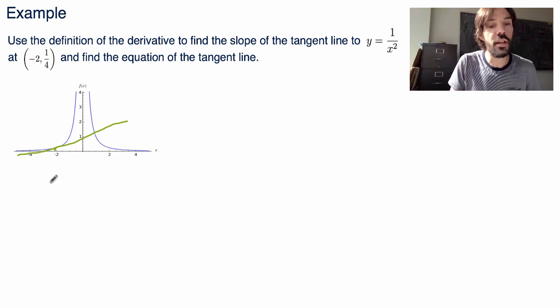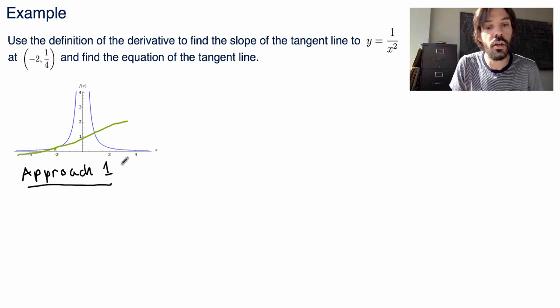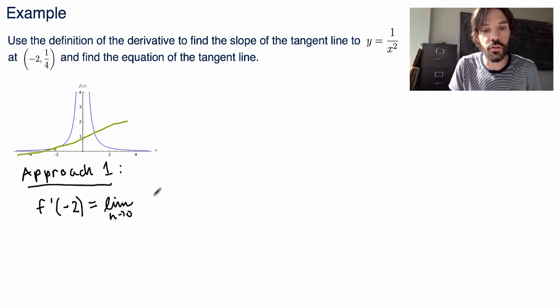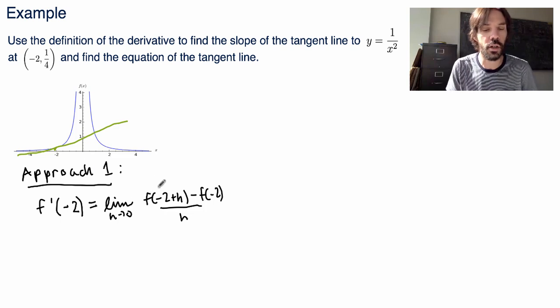Ok, so to find the equation of the tangent line what we really need to do first is find the slope of the tangent line. Now there's two ways you can do that. So let me first talk about the approach that I will call approach 1, which consists in finding the slope directly from the definition of the derivative at the point minus 2. Because that's the point we're interested in. So you just use the definition directly. So you'll get something like this: f prime of minus 2 equals limit as h goes to 0 of f of minus 2 plus h minus f of minus 2 divided by h. And now you could replace the function by 1 over x squared and evaluate this limit. I will not do that. So I'll leave that as an exercise.